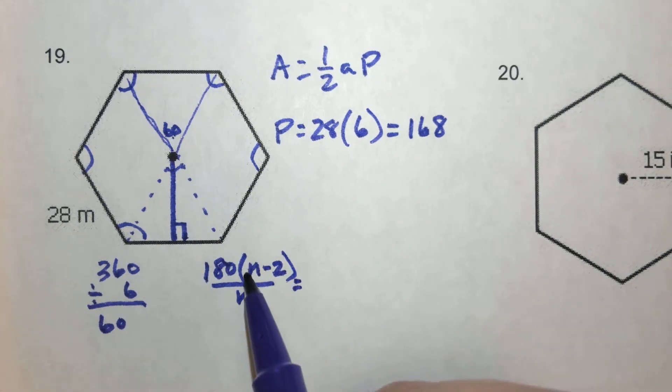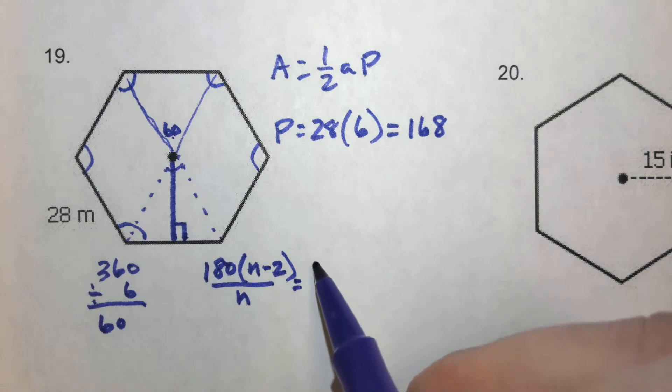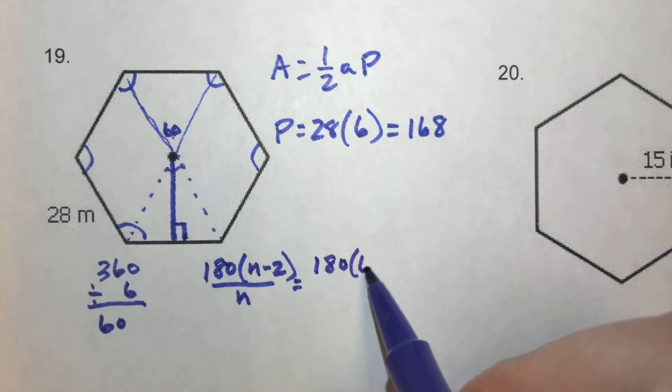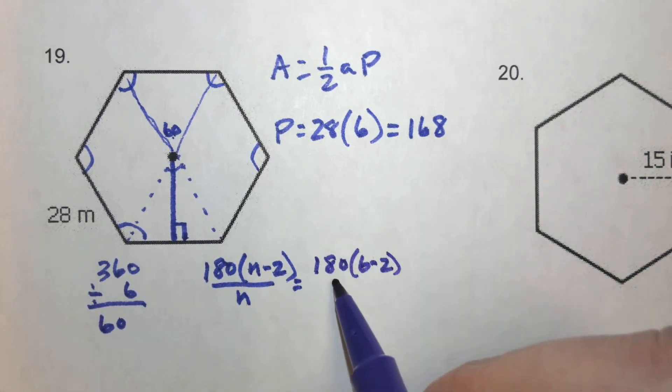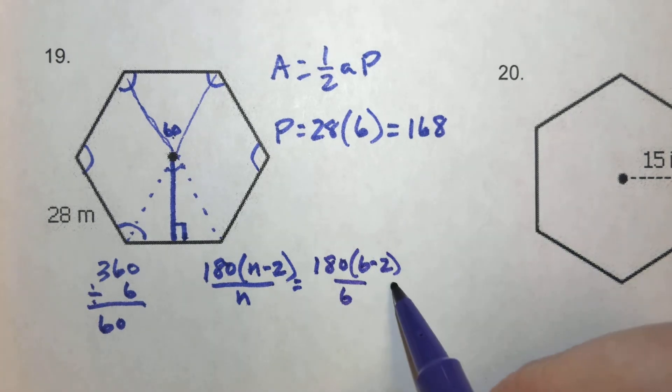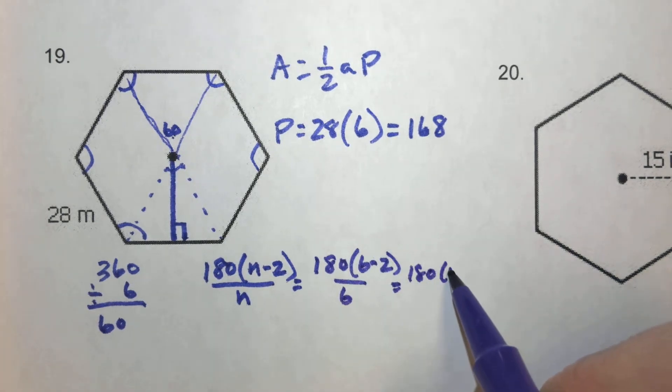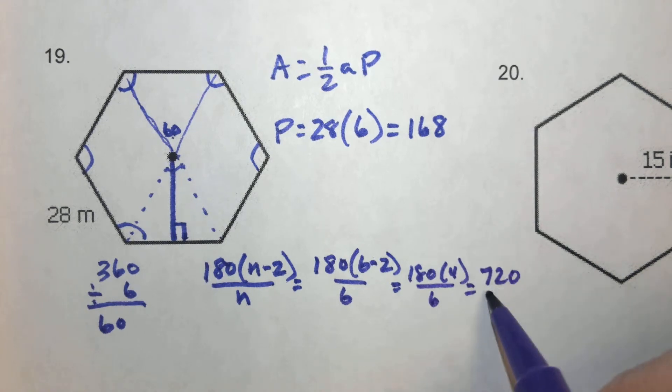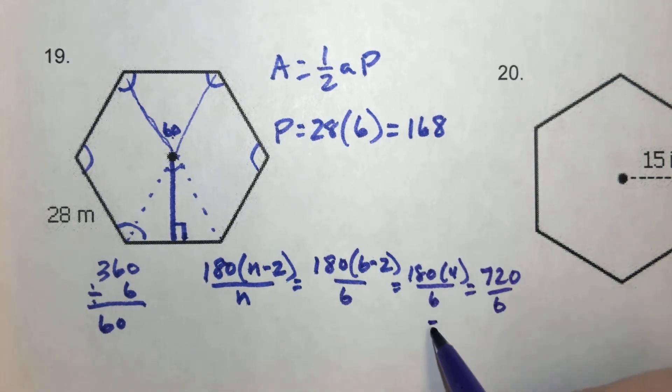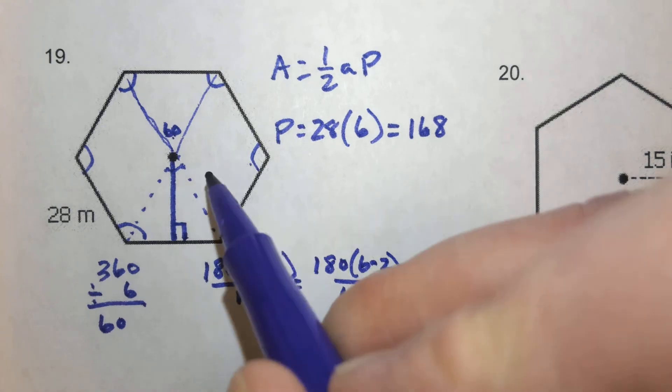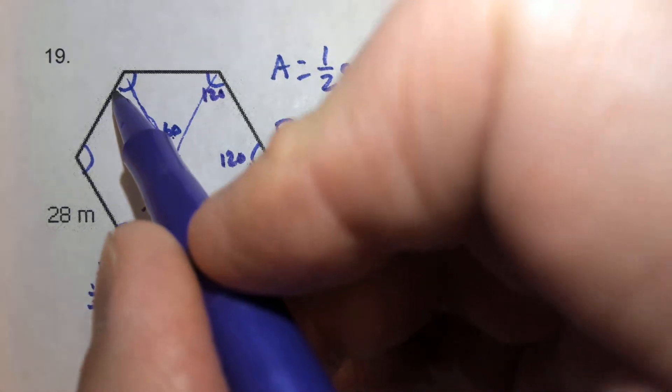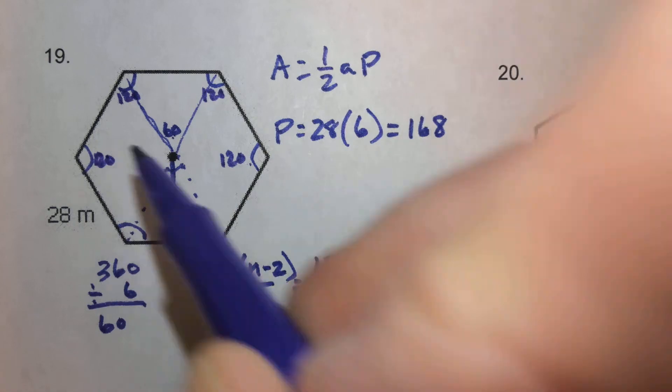So in this case, we have 6 sides. N is the number of sides, by the way. We have 180 times 6 minus 2, divided by 6, which is 180 times 4, and that is 720 divided by 6. So each one of these angles out here is 120 degrees.